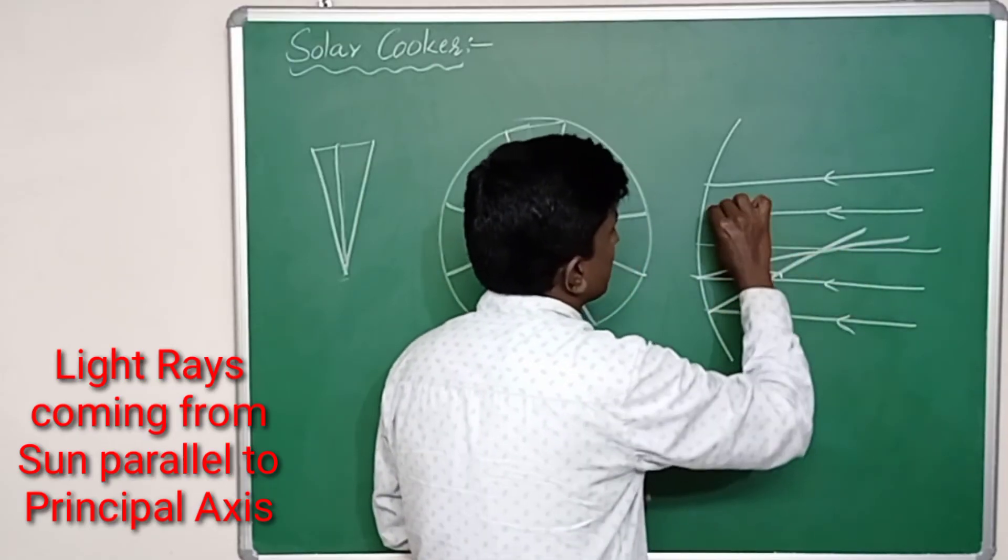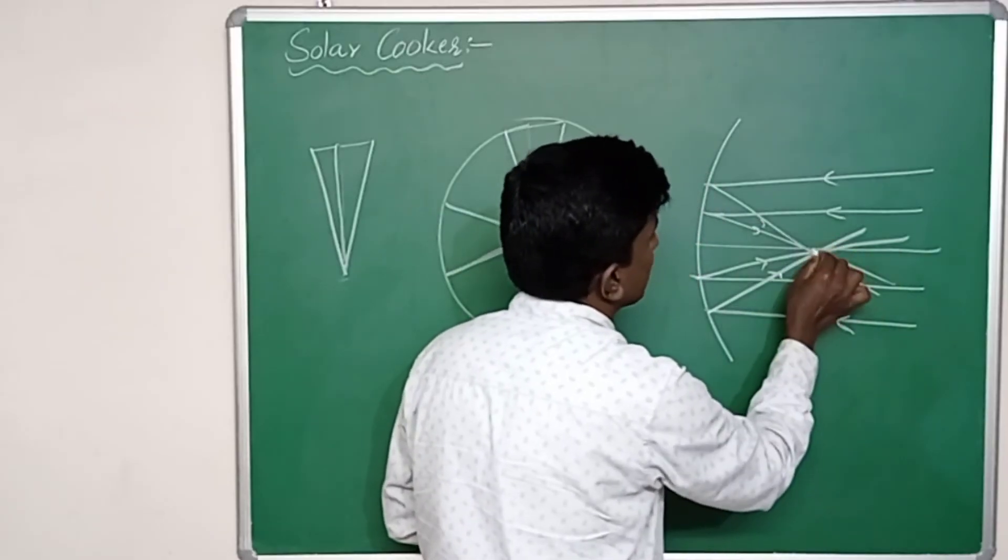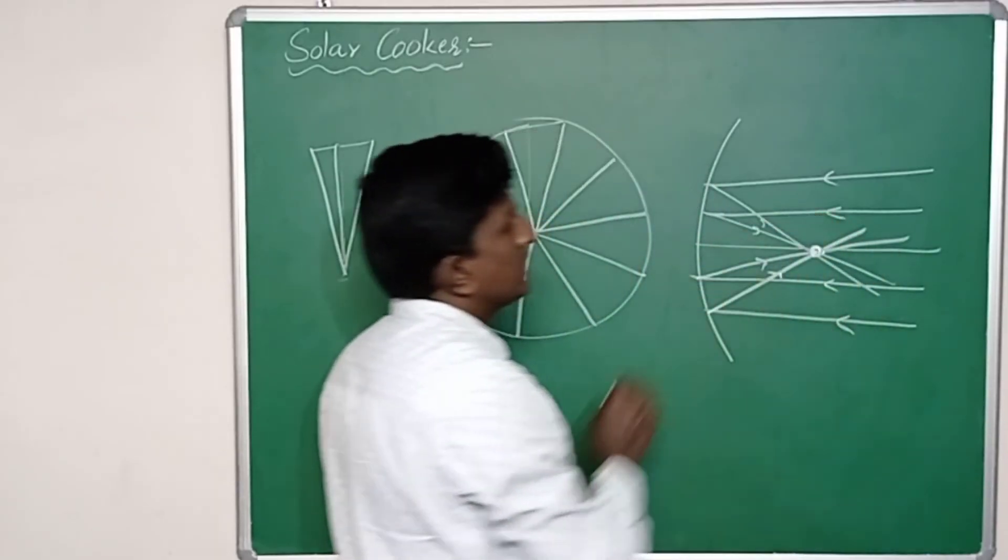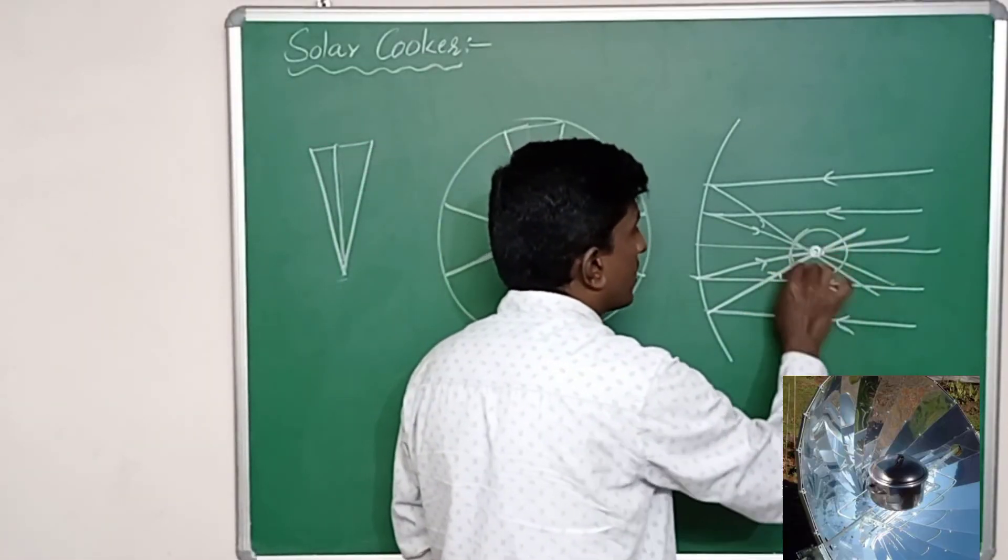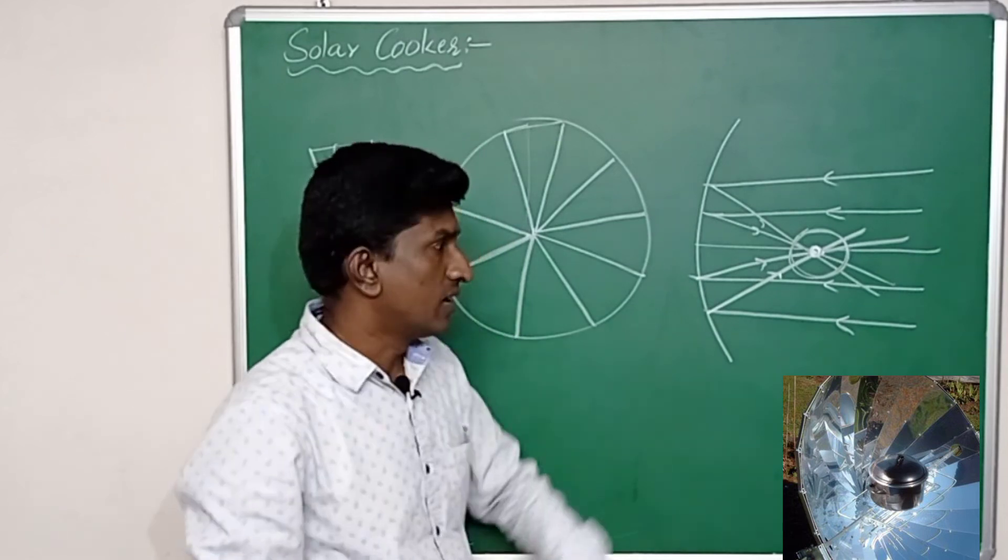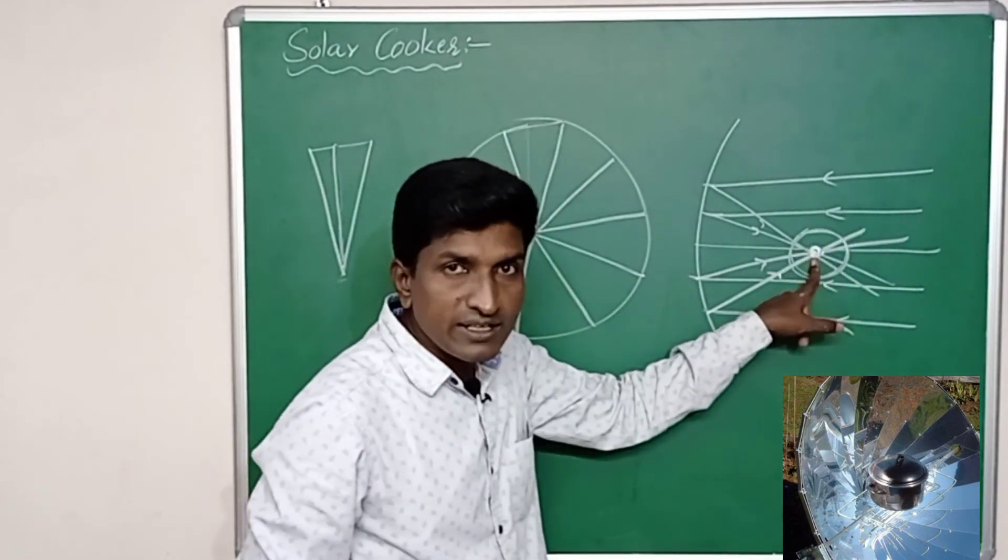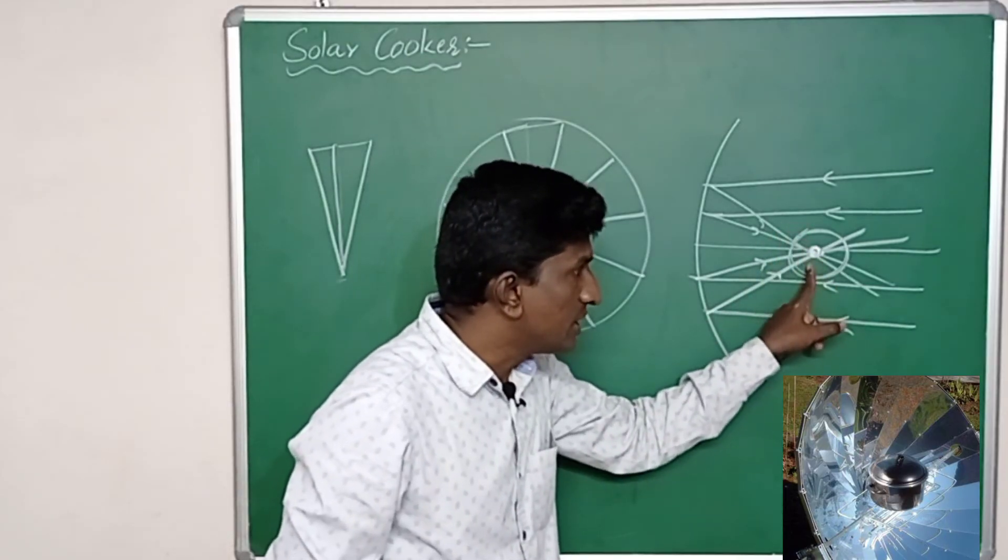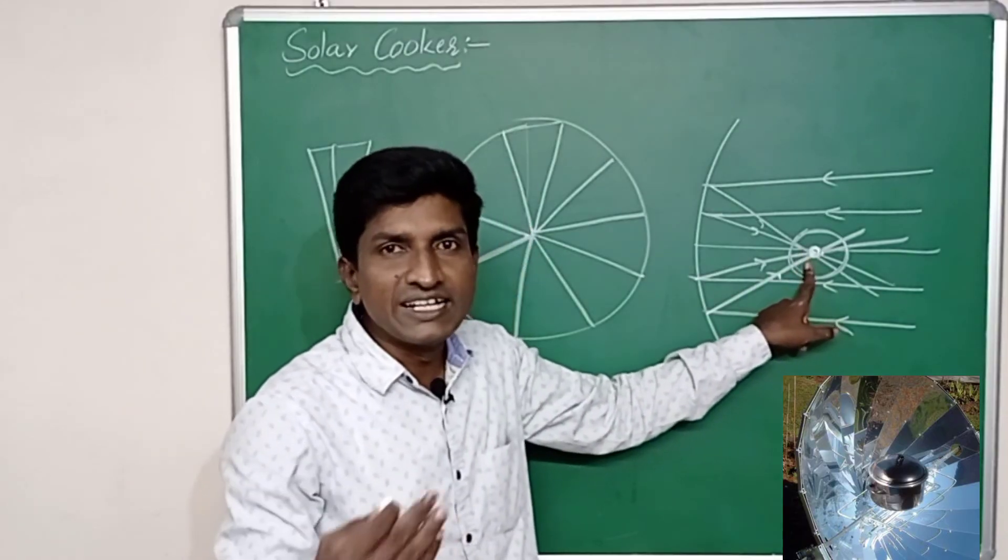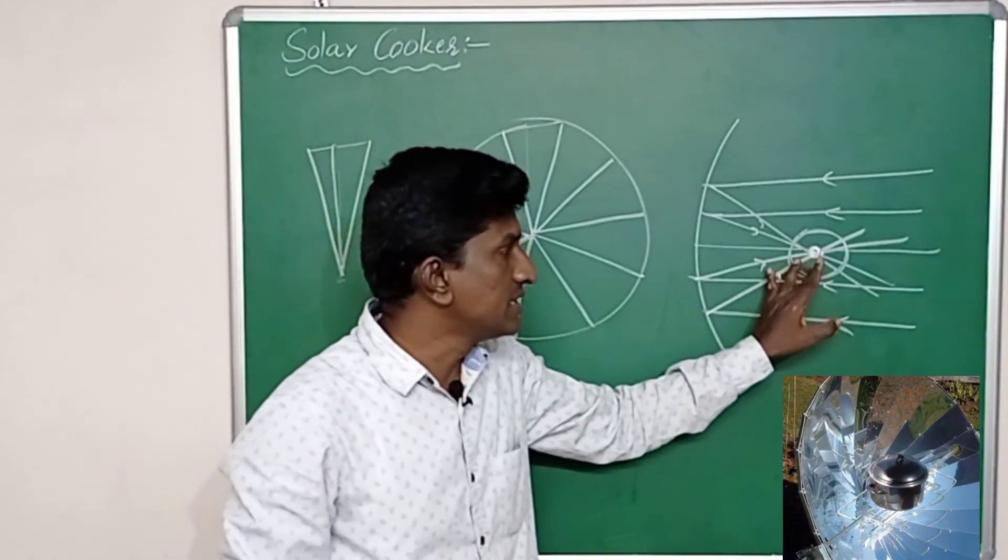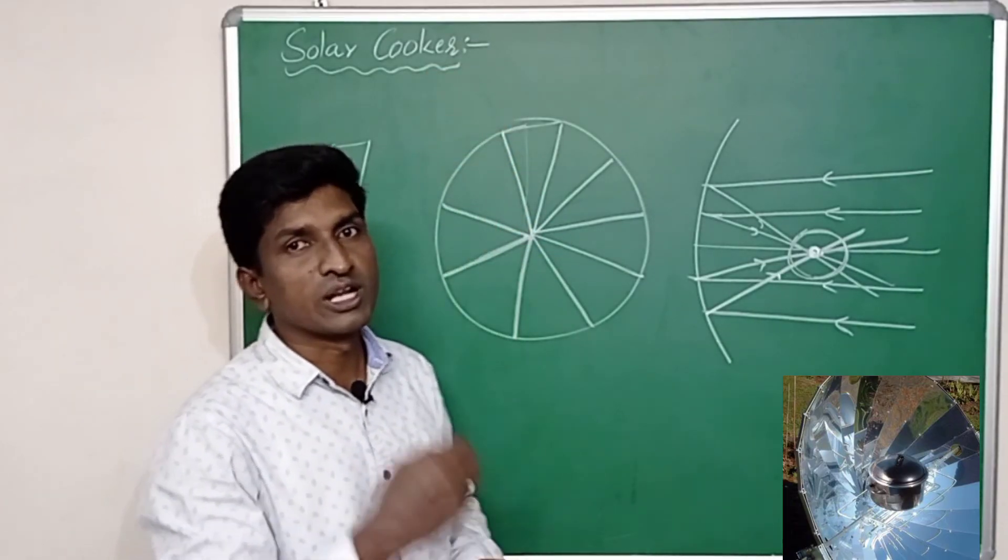Then what happens? They all will get reflected. Then these reflected light rays pass through the focal point. So here all the light rays are intersecting at the focus. Then if you keep a bowl or a cooker, then all the sunlight rays are intersecting here. So at that point if you keep a cooker or anything, then it gets heated.